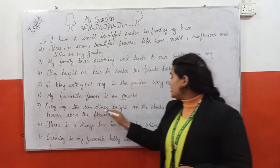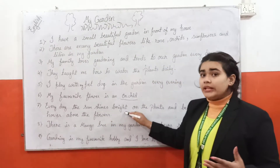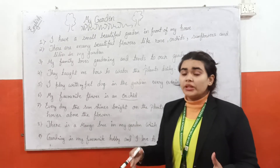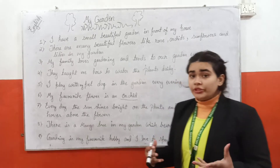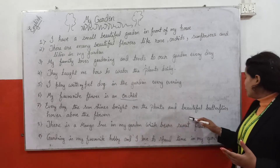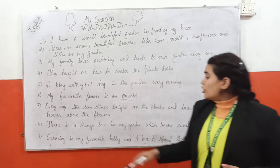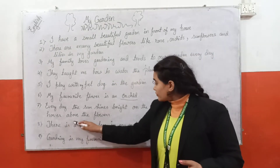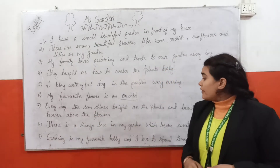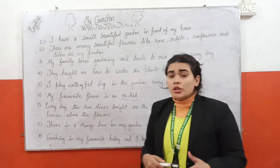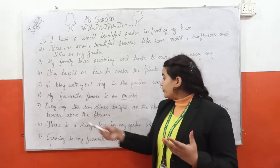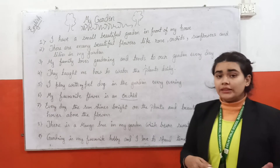Next one is: every day the sun shines bright, and the flowers bloom in beautiful and colorful ways. All the plants are beautiful, and butterflies hover over the flowers. Above the flowers, we see beautiful butterflies come over the flowers and roam here and there.